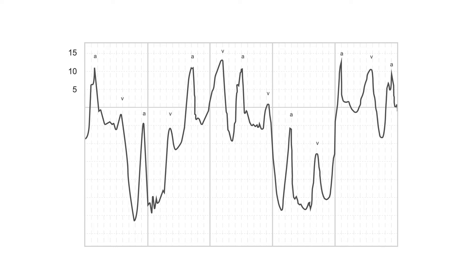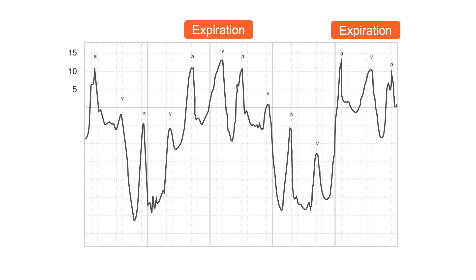The monitor will measure a wedge pressure for you, but we want to ensure it is accurate and not measuring artifact. The correct timing in the respiratory cycle to measure the PCWP or any pressure is end expiration. And remember, the expiratory pressures will be higher than the inspiratory pressures.